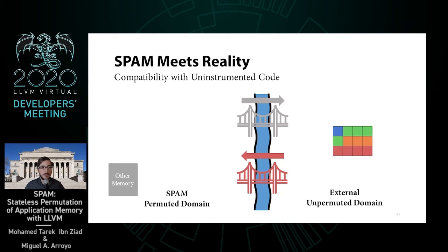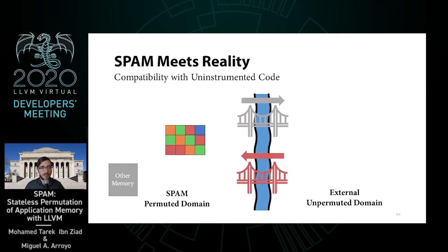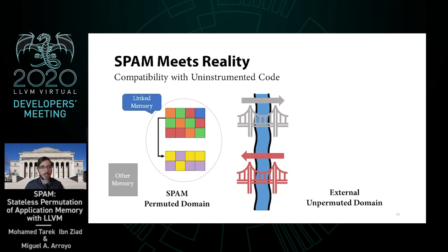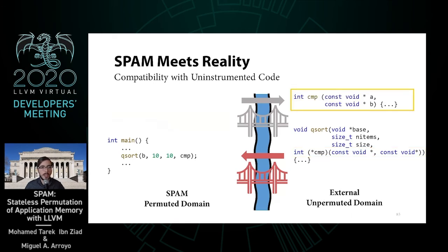In the opposite direction, we provide a permute primitive to shuffle memory so it is accessible by SPAM-instrumented code. Additionally, if we have multiple chunks of data that are linked, such as structs that point to other structs, we recursively unpermute and permute them as necessary. Because of this boundary, we also need to be aware of application code that may be called from either side via function pointers. A good example is qsort, which takes a function pointer to a comparison function. Our solution is to move this comparison function across the boundary by choosing not to instrument it, so it can reliably operate on unpermuted memory.